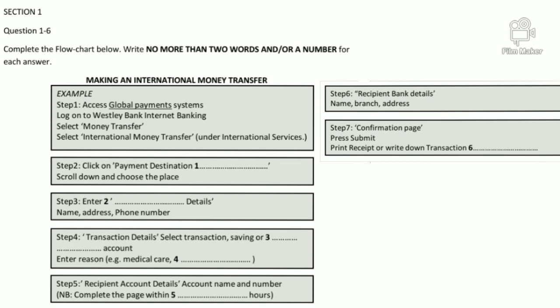Once you've done that, select 'International Money Transfer.' I don't see it. It's the first option under the heading of International Services. Right, I found it. Now click on 'Payment Destination Country' and scroll down to the location you wish to send money to — it's all in alphabetical order. Yes, Zimbabwe — I've got it right at the bottom.